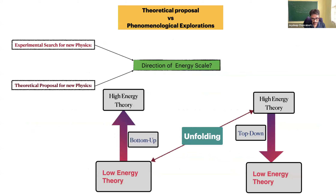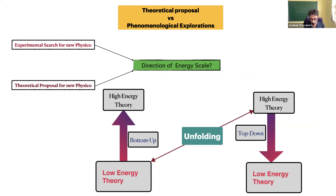In the bottom-up approach, you start with low energy theories, then using mathematical principles, you construct effective operators to capture UV effects without knowing them in detail. In the top-down approach, you start with your favored high energy theory, identify the non-standard or heavy particles, integrate them out, and construct the low-energy effective Lagrangian.